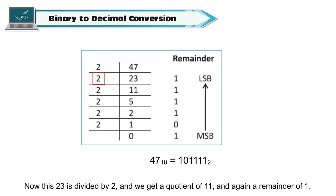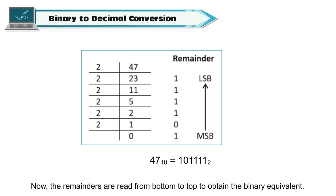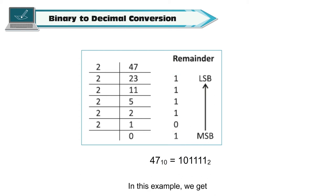Now, this 23 is divided by 2 and we get a quotient of 11 and again a remainder of 1. We keep dividing and noting the remainders. The remainders are read from bottom to top to obtain the binary equivalent. In this example, we get 47 base 10 is equal to 101111 base 2.